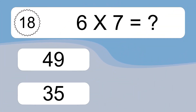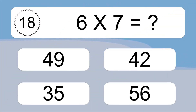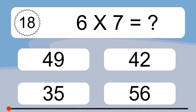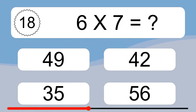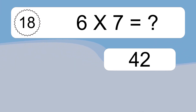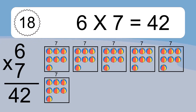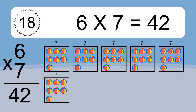Six times seven equals what? Six times seven equals 42. We have six boxes, and each box has seven colorful balls inside. If you count all the balls in all the boxes together, you will have six times seven balls. This equals 42 balls.